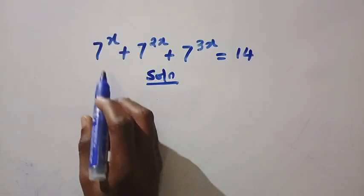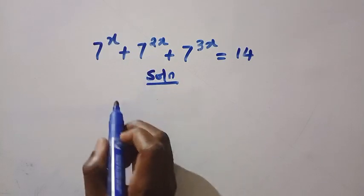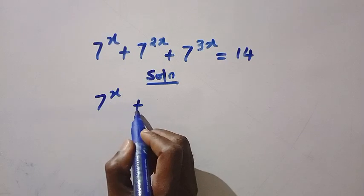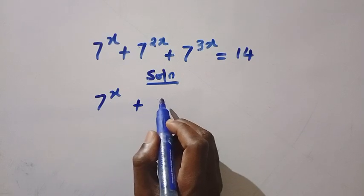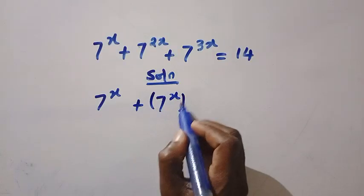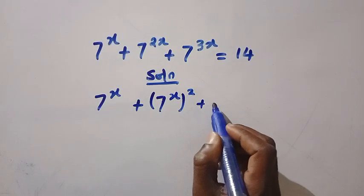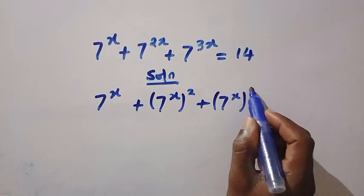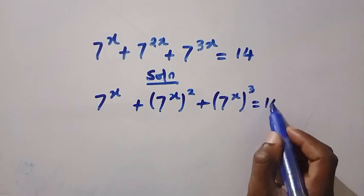Here we have 7^x and this is 7^(2x). If this remains 7^x + 7^(2x) is still the same thing as 7^x all to the power of 2, then plus 7^x all to the power of 3 equals 14.